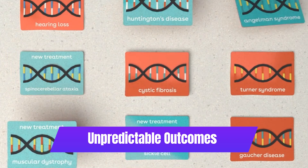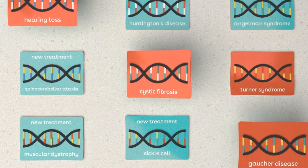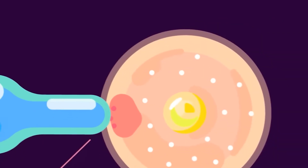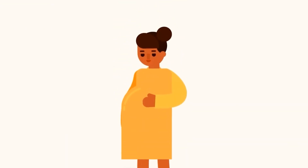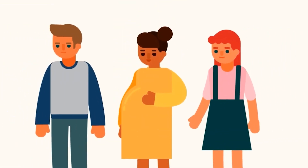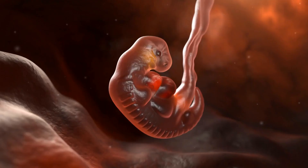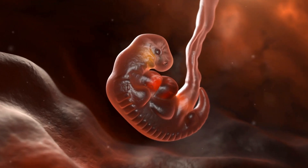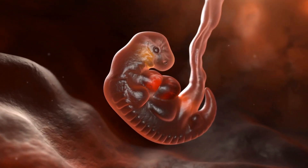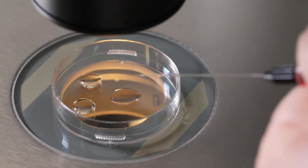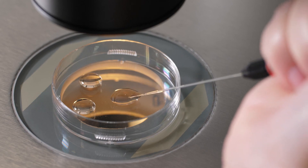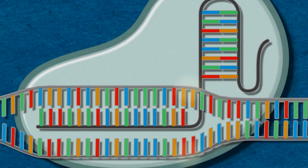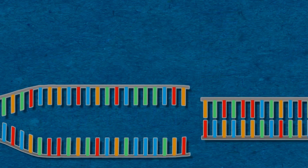Unpredictable outcomes represent a significant ethical concern in genetic modification. Genetic engineering is a complex field, and the long-term consequences of altering genes are not fully understood. There is a risk of unintended consequences and unforeseen genetic mutations. Genetic engineering is a rapidly evolving field, and the full extent of its long-term effects on individuals and society is not yet fully understood.